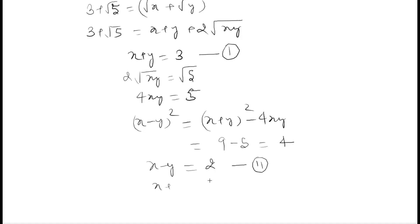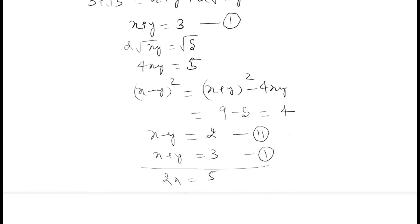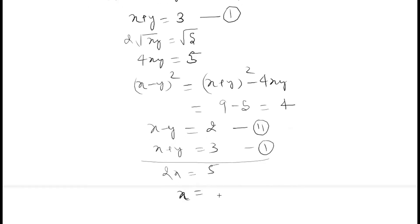My first equation was x plus y equals 3. So when you sum up, this will become 2x equals 5, and x will be equal to 5 by 2. Then from here, y will be equal to half.